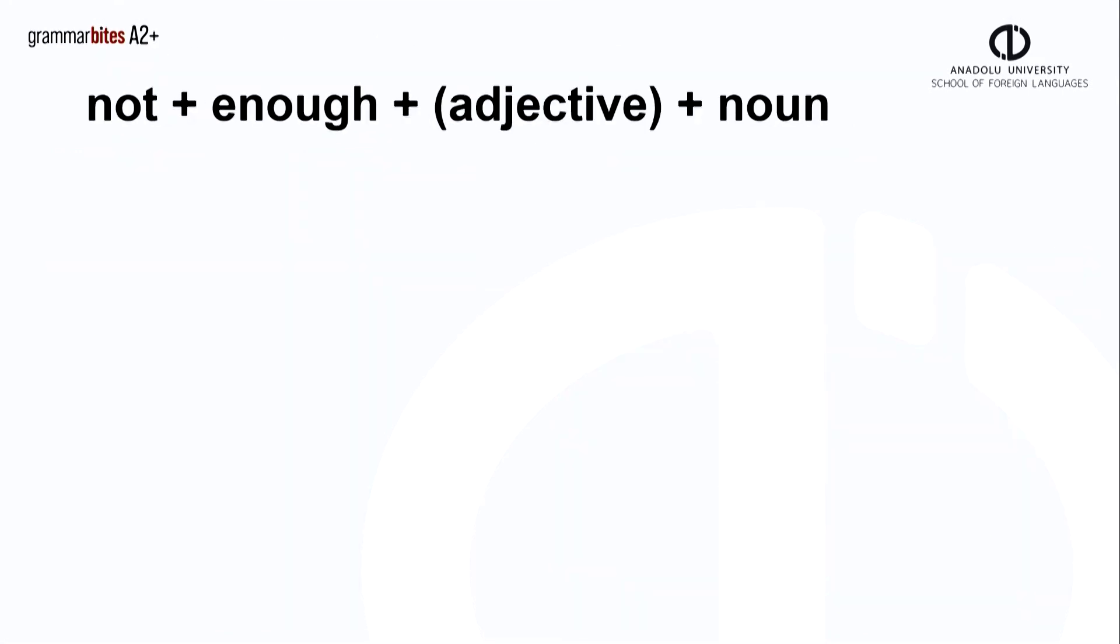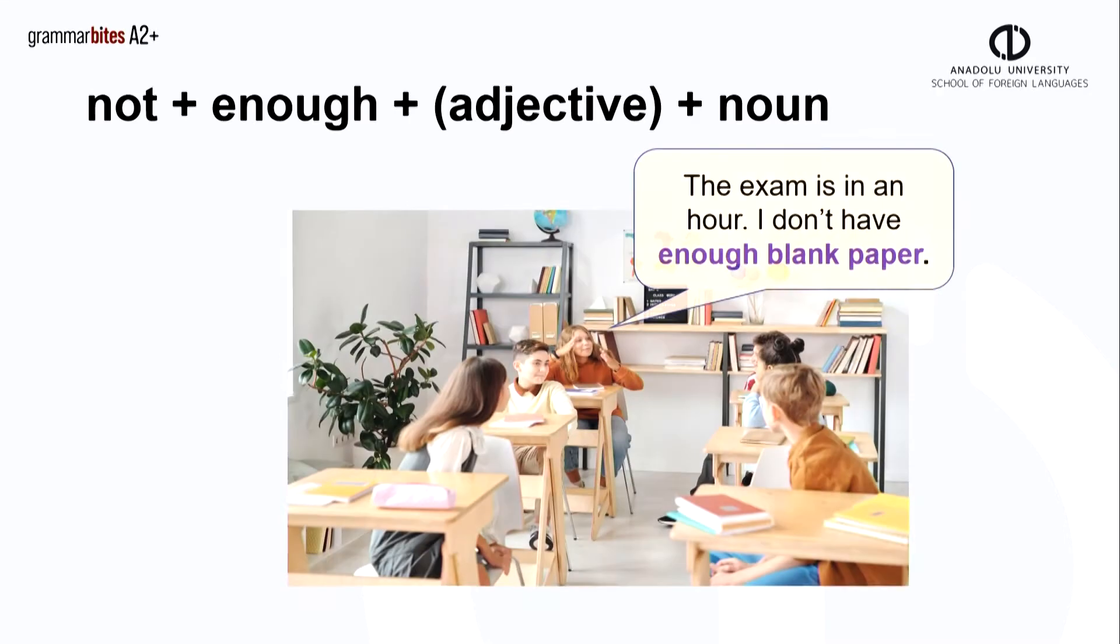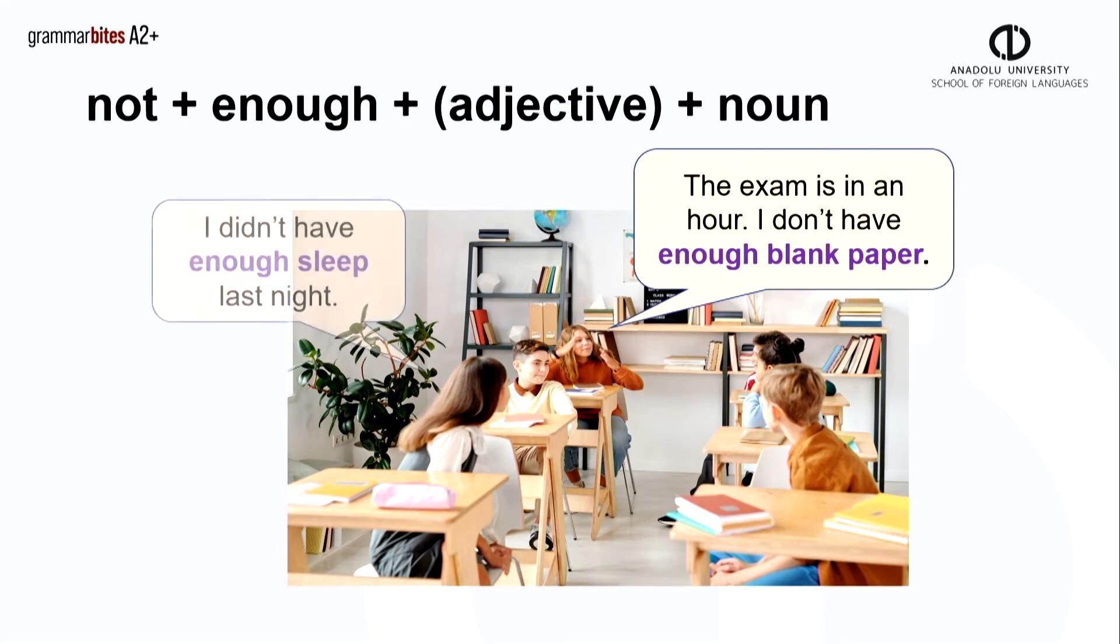We can also use this with nouns. Of course, sometimes we may add an adjective to describe the noun that we use. Here are two examples. The exam is in an hour. I don't have enough blank paper. I didn't have enough sleep last night. We use not, then enough, followed by our noun. She did not have enough sleep. She does not have enough paper.